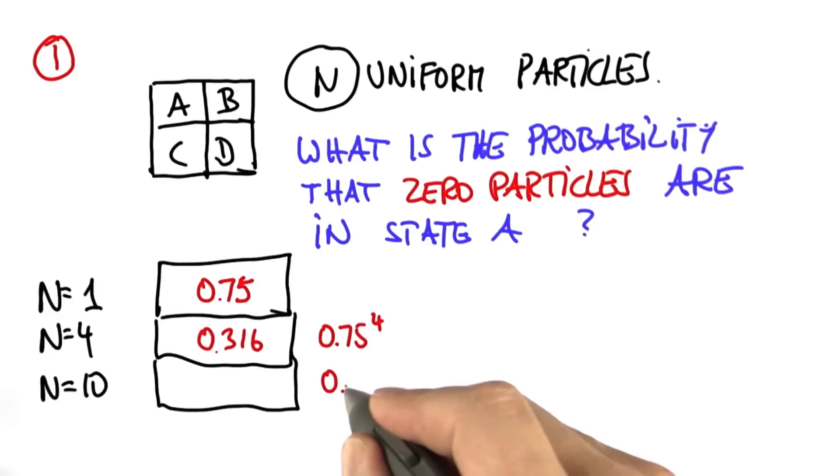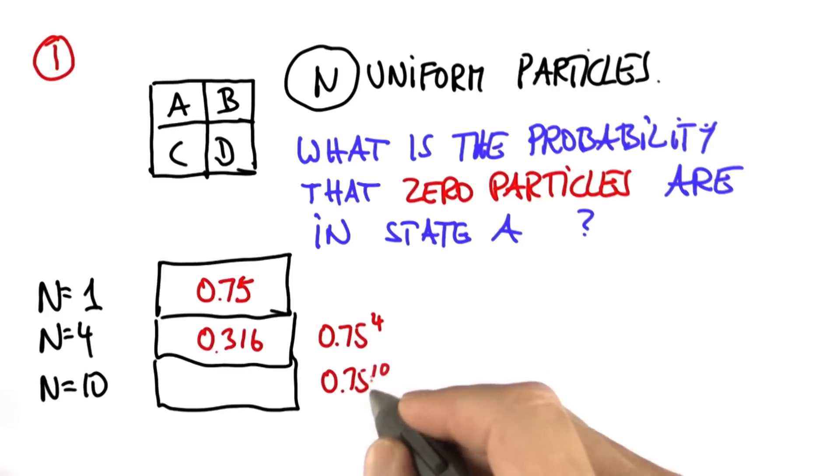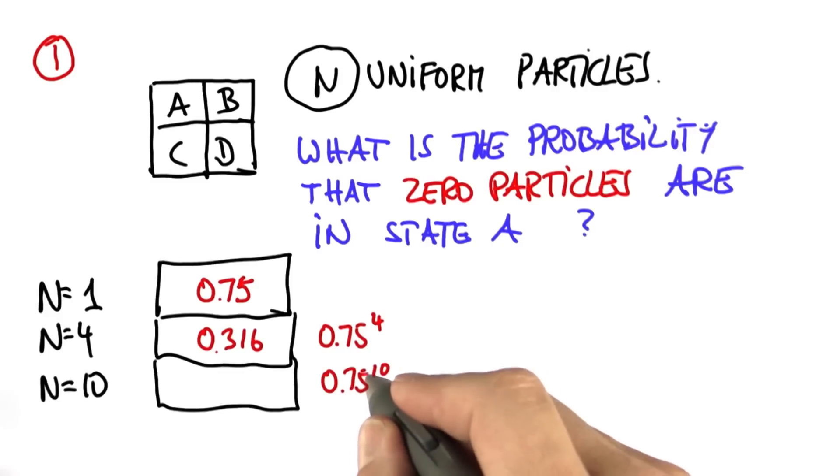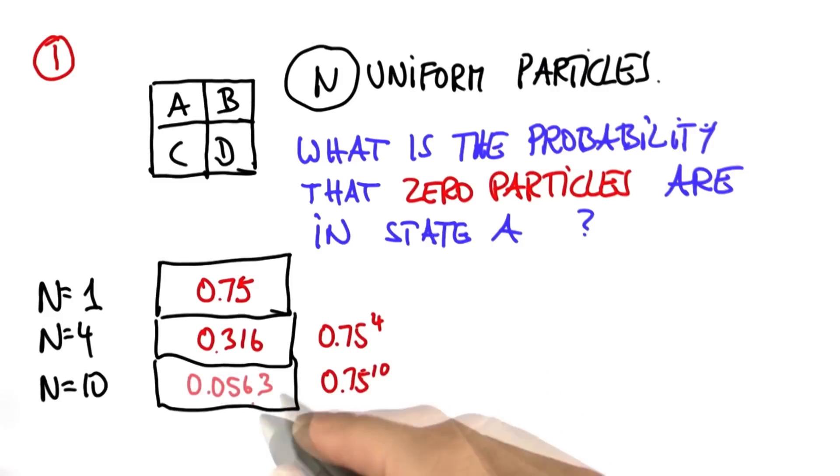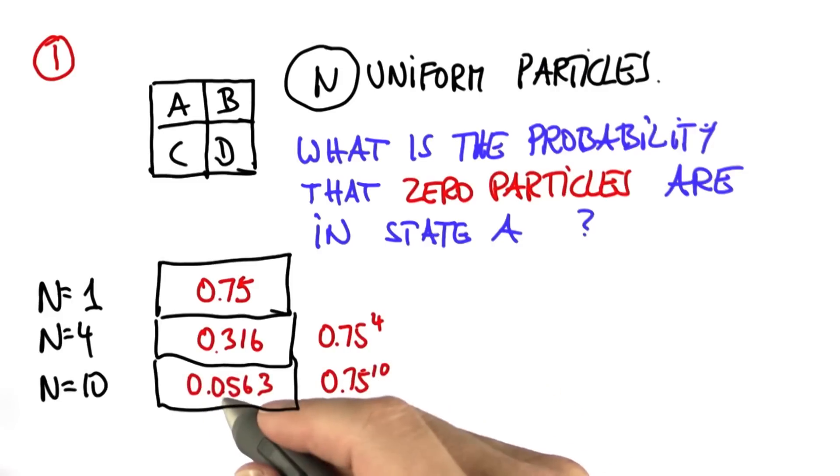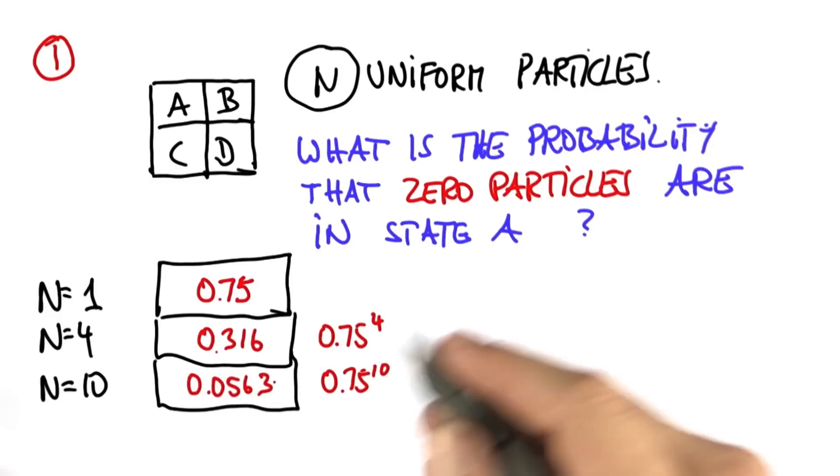And as we move on, we get 0.75 to the tenth, with a probability of 0.0563.